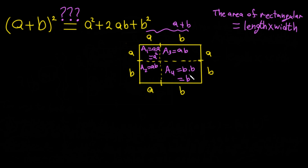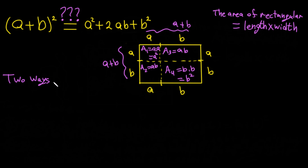Of course here we have a plus b, so the area of this shape is (a + b) multiplied by (a + b), which gives the total area inside this shape: a squared plus b squared plus ab plus ab — which gives the same result. If I want to illustrate it, I'll write out two ways to find the area.